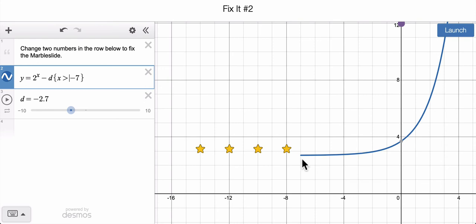And if I look at the graph, it kind of makes sense. Here's negative 7, and I'm only graphing values of this equation where x is greater than negative 7. So I'm not going to graph anything where x is less than negative 7. So I want to change that.